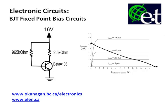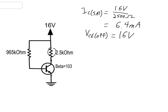Our next job is to find where the operating point actually falls on the load line. We want to find ICQ — the collector current at the quiescent point — and VCEQ, the collector-emitter voltage at the quiescent point. Step one is to find the base current IB.